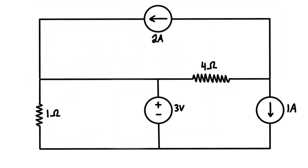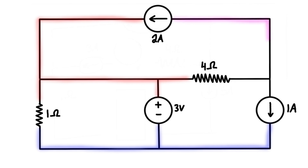The first thing to do with a problem like this is identify all the different nodes. We have one node up here that we can color in red, and another node down here we can color in blue. Nodes are basically everything in between elements — once you start drawing on a wire, keep going until you hit all the other elements, and that will be one node. That leaves us with one more node to color up here with a different color.